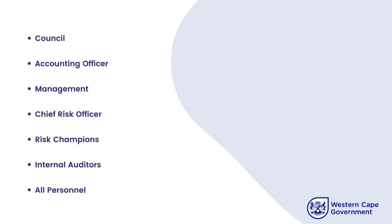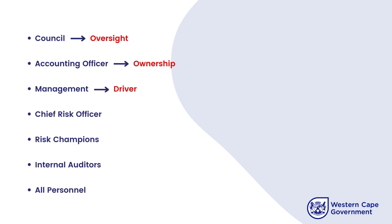Internally, the role players are the executive counsel, who are responsible for the oversight of risk management; the accounting officer, as the owner of the whole risk management process; management, being the driver of the risk identification and risk assessment; and then the CROs, as the facilitator of the risk management process.